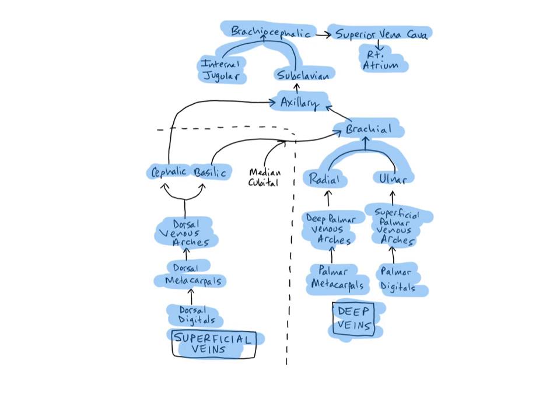The basilic veins begin on the medial aspect of the dorsal venous arches of the hands and ascend along the posteromedial surface of the forearm and anteromedial surface of the arm. The basilics receive blood from the median cubital veins, the veins most commonly used for venipuncture, at the anterior elbow. The term cubital refers to the elbow region. They continue ascending until they reach the middle of the arm, then run deeply until they join with the brachial veins to form the axillary veins. The basilics drain the skin and superficial muscles of the medial aspect of the upper limb.